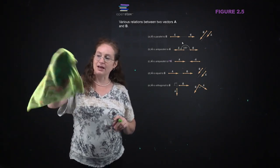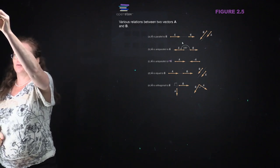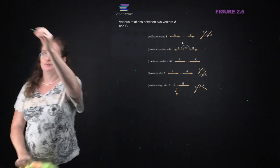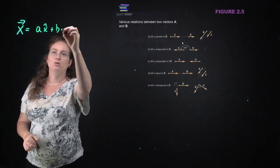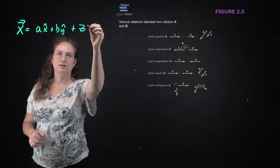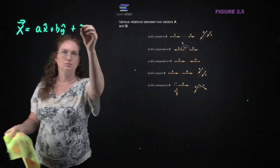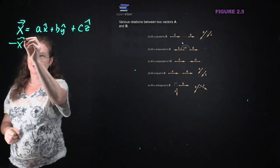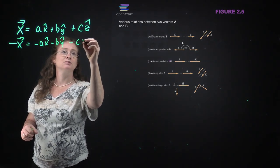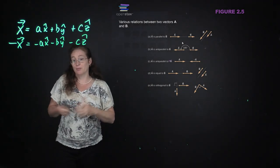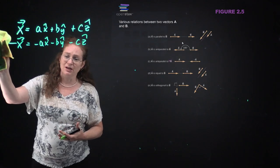The fact that A is anti-parallel to negative A makes sense if we go back to our notation where some vector X equals A x-hat plus B y-hat plus C z-hat. Because then negative X just puts the negative sign out in front of everything - all of the components of negative X are the negative of the components of X.